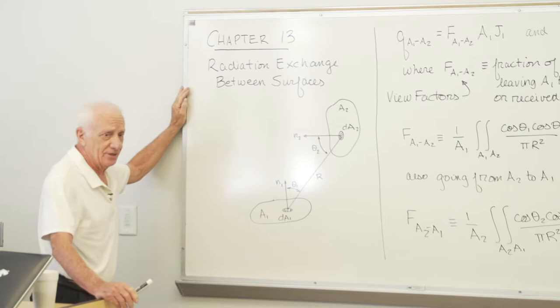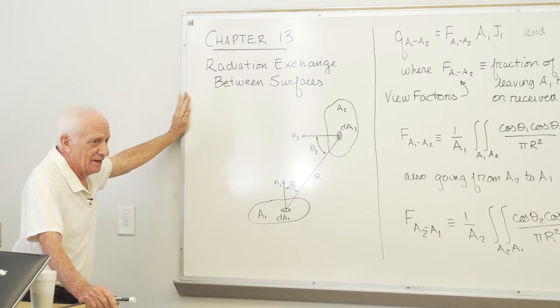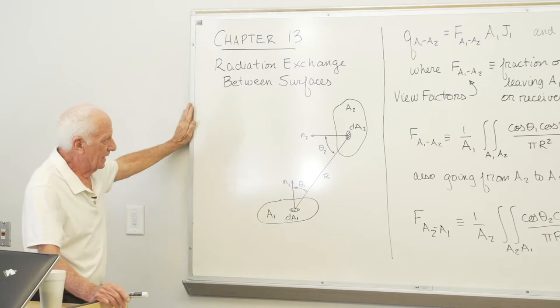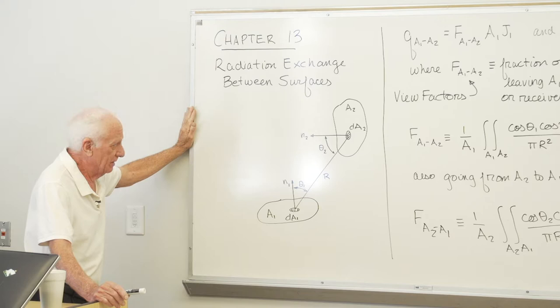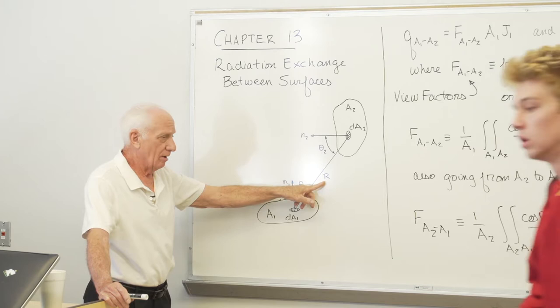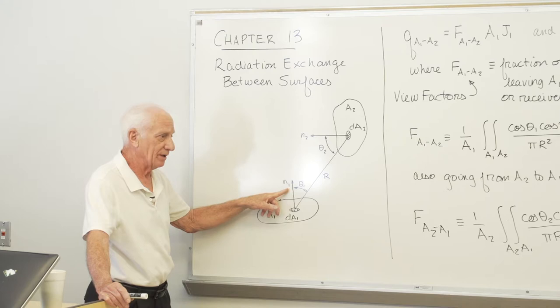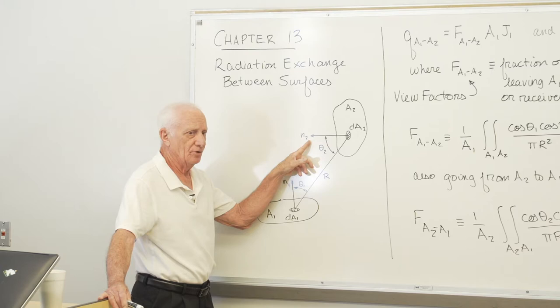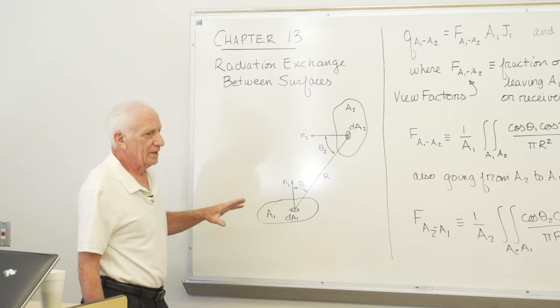To begin with, we're going to look at two surfaces exchanging radiation, surface A1 and A2. We identified differential areas on those two surfaces, dA1 and dA2. They are separated by a distance, capital R, and they're oriented with different angles theta. Theta 1 is the angle between the R distance and the normal distance to surface dA1, called N1. N1 is normal to surface dA1. Theta 2 is the angle between R and the normal to surface dA2, N2.